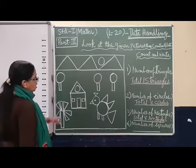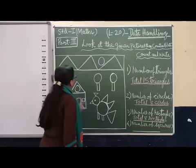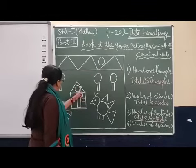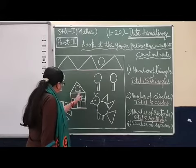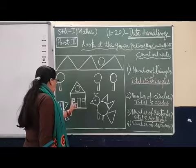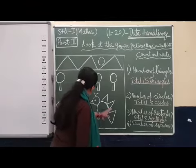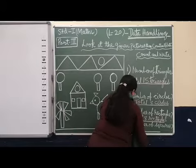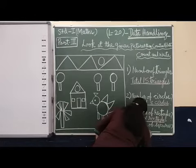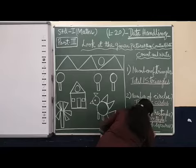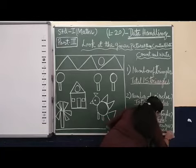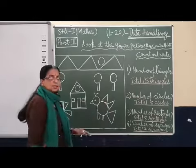Now, number of squares. Here triangle, circle, here rectangles, here circle, triangle. This is also rectangle, rectangle, this is square. One, two, rectangle, rectangle, only two squares are there. So total two squares, S-Q-U-A-R-E-S. Total two squares.